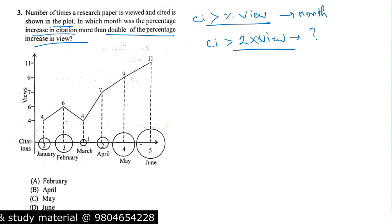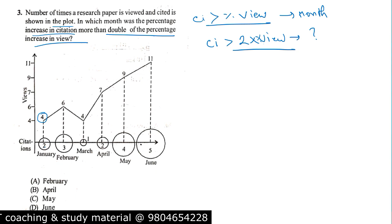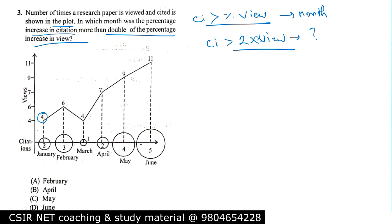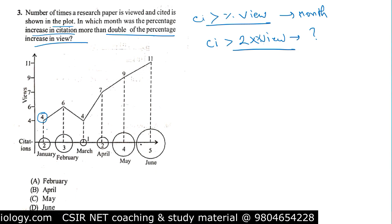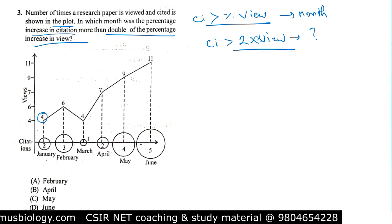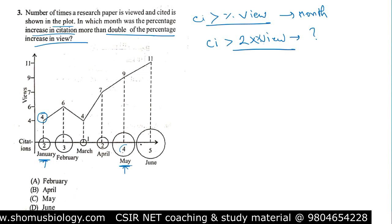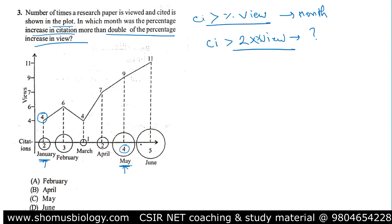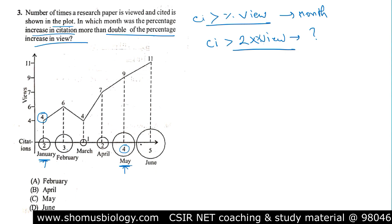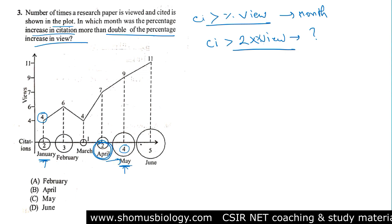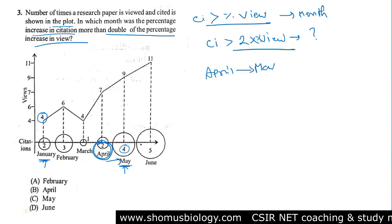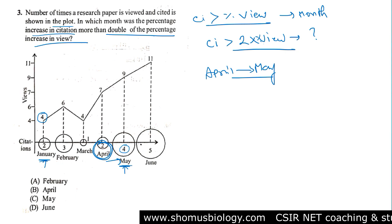Looking at the graph: in January we have 2 citations and 4 views; in April we have 2 citations and 7 views; in May we have 4 citations and 9 views. From April to May, citations go from 2 to 4 — that's a 100% increase, i.e., citations doubled. So April to May is where the citation spike occurs — you can see that just by looking at the graph.